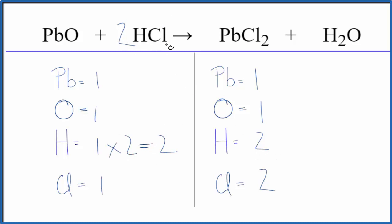And the two goes to everything here. So we have one chlorine times two, that equals two. Chlorine atoms are balanced. We're done. This equation is balanced.